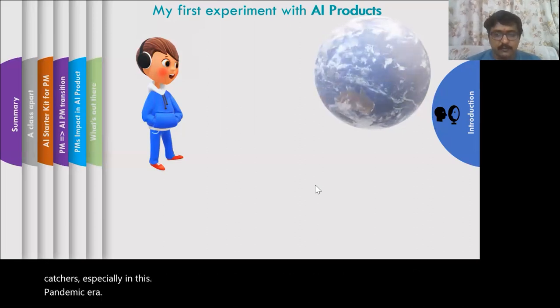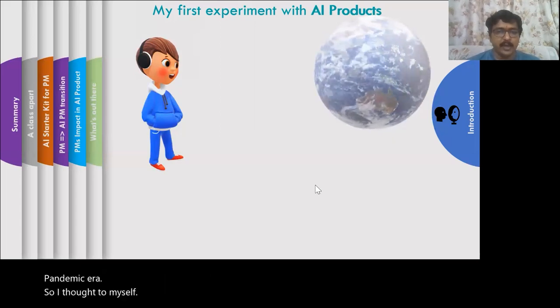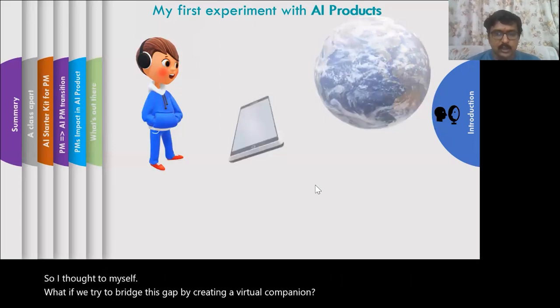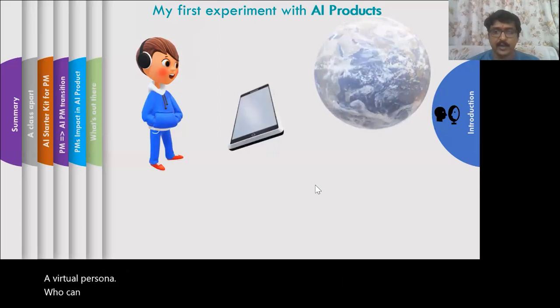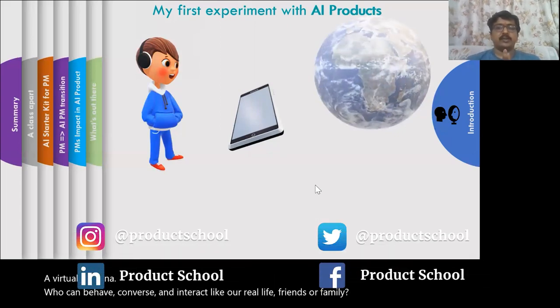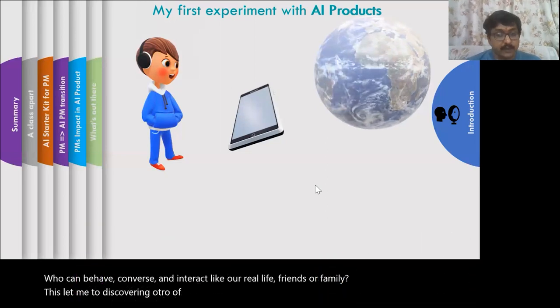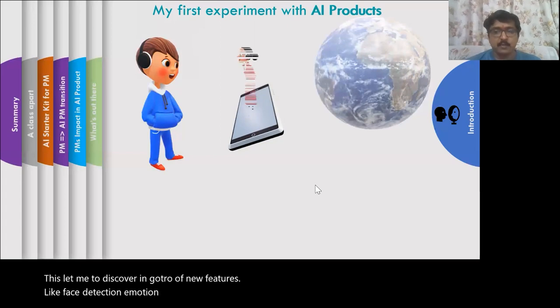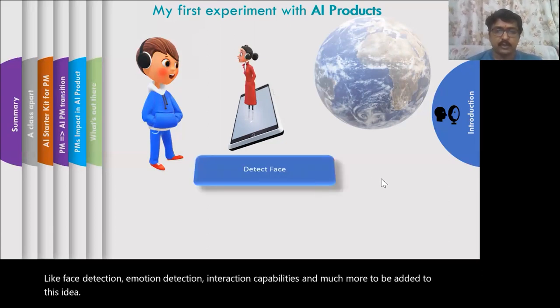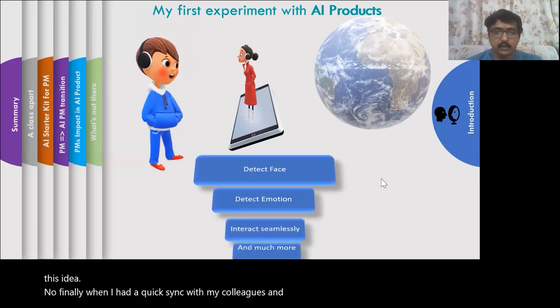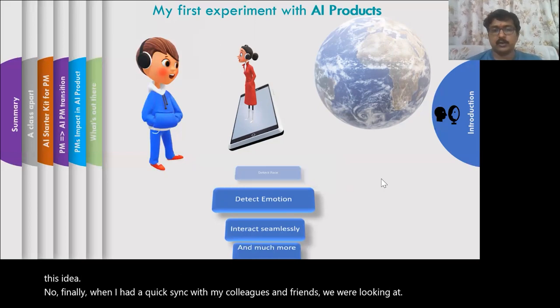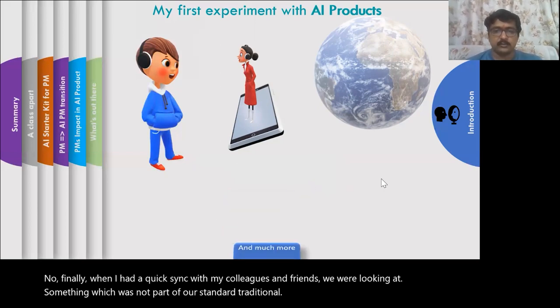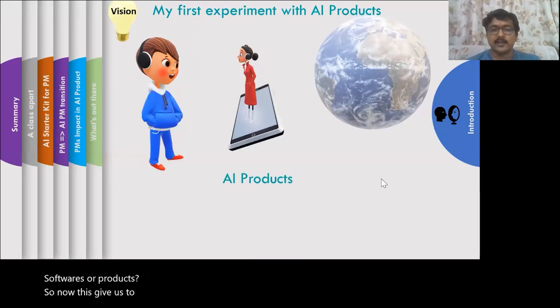So we end up latching on to the next immediate connection to our external world, which is electronic gadgets, especially in this pandemic era. So I thought to myself: what if we try to bridge this gap by creating a virtual companion, a virtual persona who can behave, converse, and interact like our real life friends or family? This led me to discovering features like face detection, emotion detection, interaction capabilities, and more. When I had a quick sync with my colleagues, we were looking at something which was not part of our standard traditional software products.